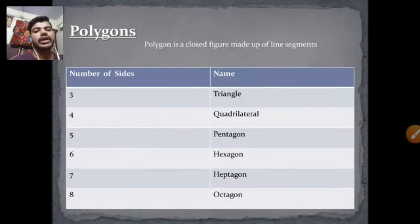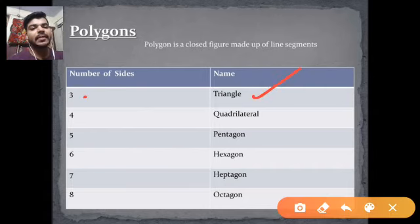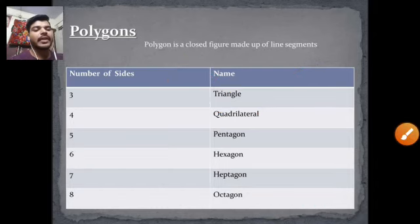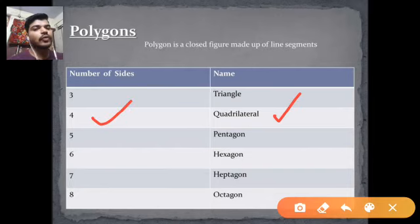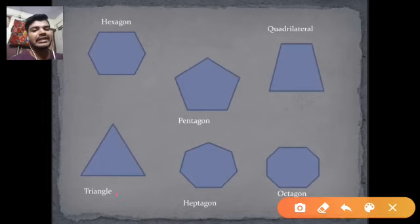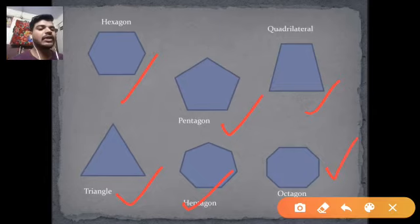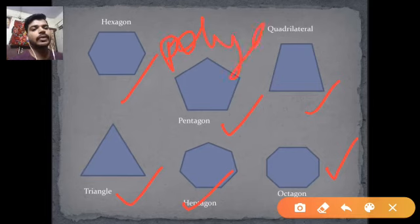Now coming to polygons. A polygon is a geometrical shape — a closed figure having more than two sides. For example, a triangle is a polygon having three sides, a quadrilateral has four sides, a pentagon has five sides, a hexagon has six sides, a heptagon has seven sides, and an octagon has eight sides. All these are kinds of polygons.